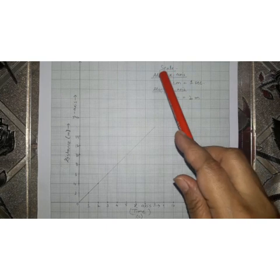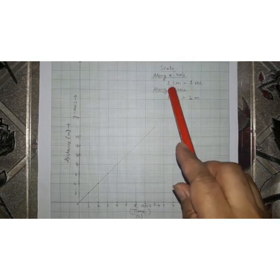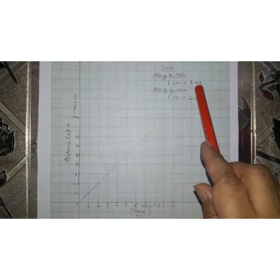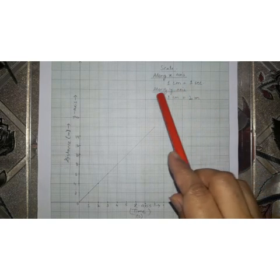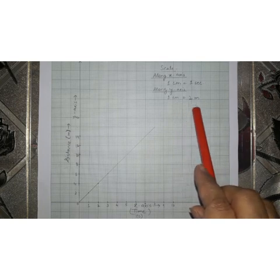Scale should also be chosen. For example, along x-axis, 1 cm is equal to 1 second. Along y-axis, 1 cm is equal to 2 m.